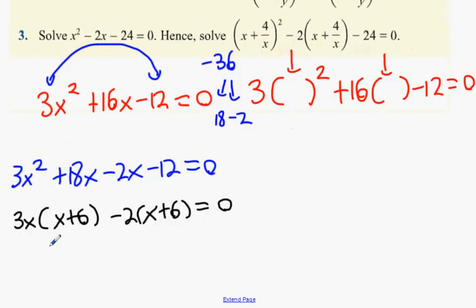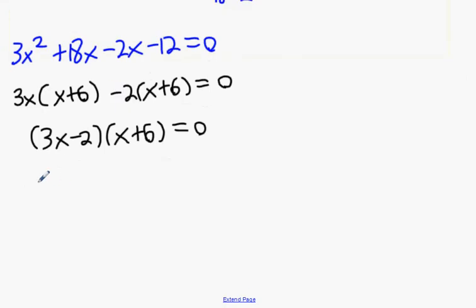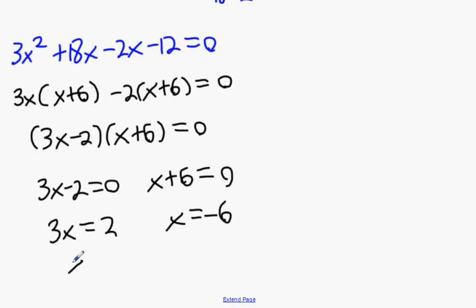We then get 3x minus 2 bracket x plus 6 equal to 0. We're then going to get 3x minus 2 equals 0, x plus 6 equals 0. x equals minus 6 and 3x equals 2, x equals 2 over 3.